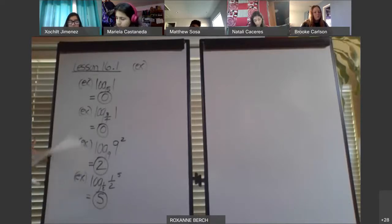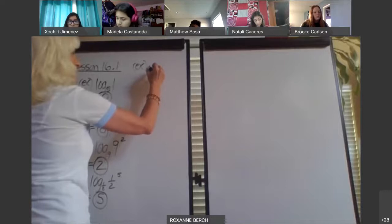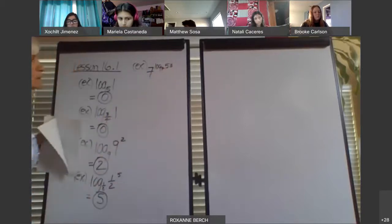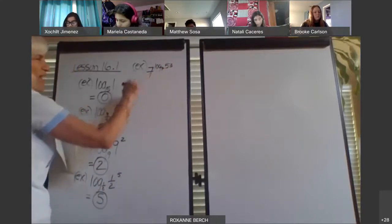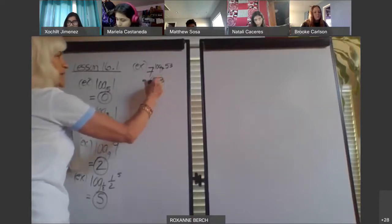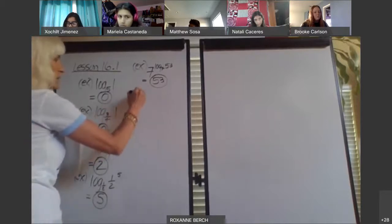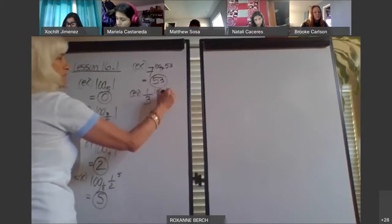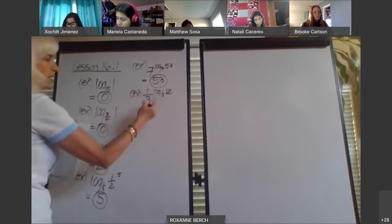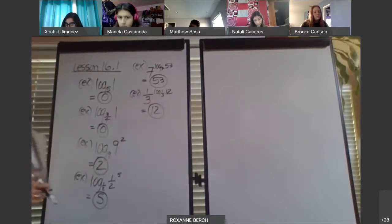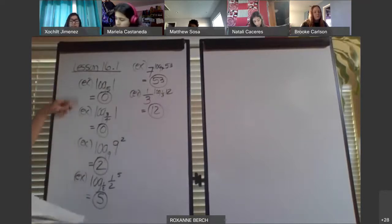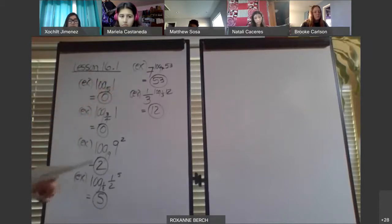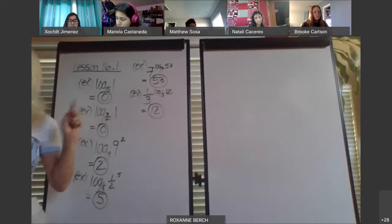If you had 7 to the power of log base 7 of 53, the base of the exponent cancels with the base of the logarithm, so the answer is 53. That's the third property. One more: one-third to the log base one-third of 12 — those undo each other — the answer is 12. Here's the first property, the second property, and now the third property. Make sure you know these. The book is not giving any practice on these at all.